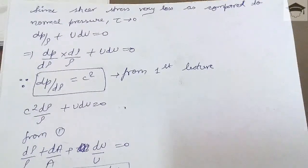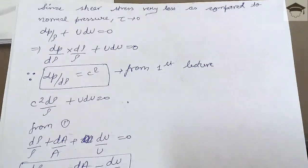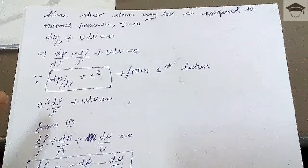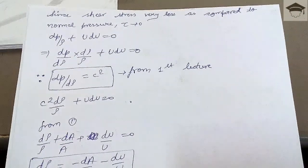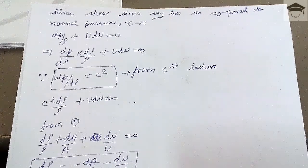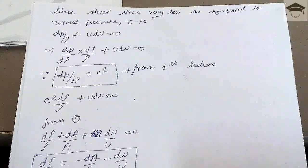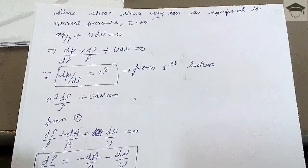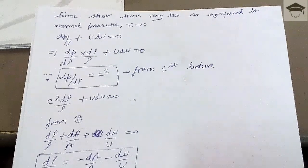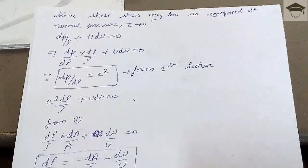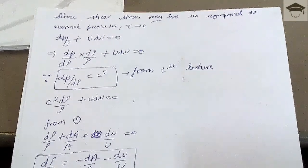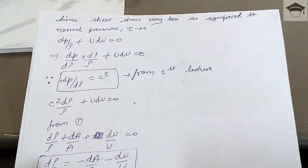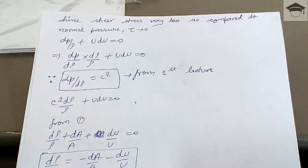Since shear stress is very small compared to normal pressure, we assume τ → 0, leaving dp/ρ + u·du = 0. Multiplying and dividing by dρ: (dp/dρ)·(dρ/ρ) + u·du = 0. Now, dp/dρ = c² (the square of the speed of sound, derived in lecture one), so c²·dρ/ρ + u·du = 0.